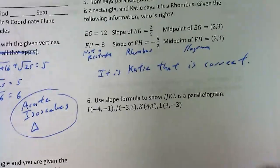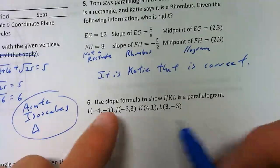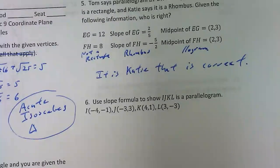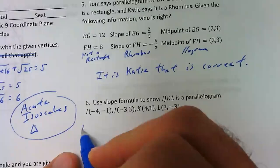Number 6: use slope formula to show that IJKL is a parallelogram. There are different ways to show that - slope, distance, or midpoint - and you have to understand how to use each to prove things. To use slope to prove a parallelogram, we need two pairs of opposite sides with the same slope. So we'll find four slopes and confirm that the two pairs of opposite sides match.